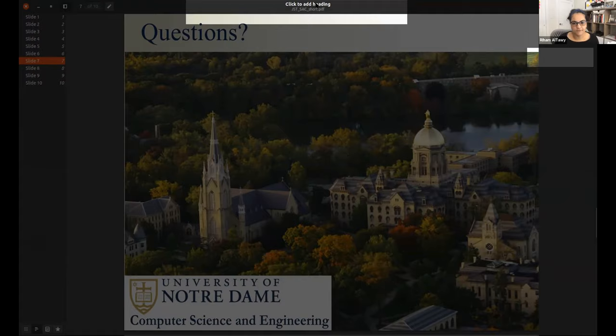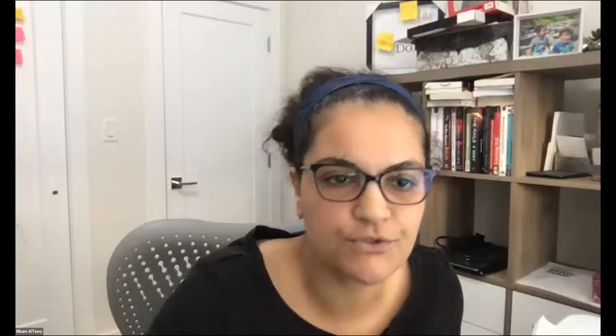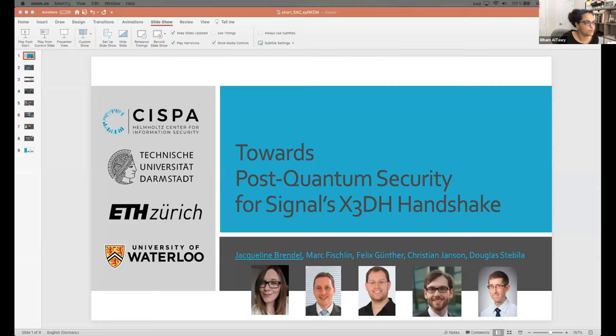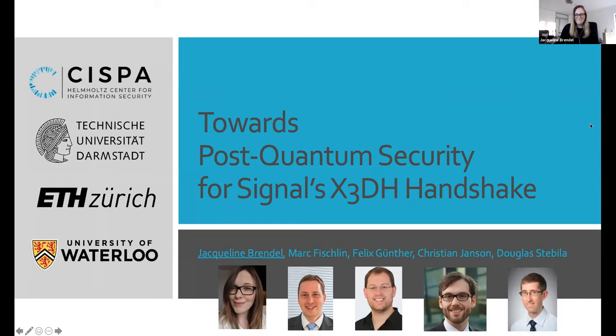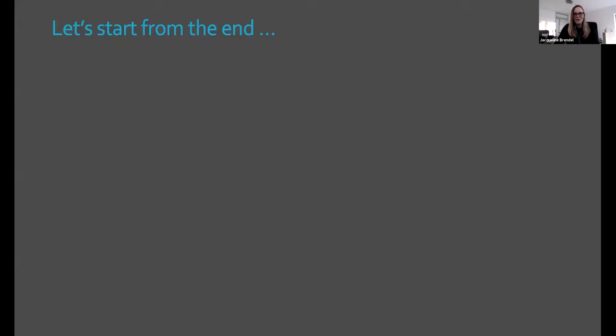Thank you, Jonathan. I think let's look at—we also don't have any questions still, and we're running somehow late, so thank you so much. Wait for the discussion in case any questions arise. We move to our last paper. The last presentation is titled Towards Post-Quantum Security for Signal's Extended Triple DH Handshake. The paper is authored by Jacqueline Brendel, Marc Fischlin, Felix Günther, Christian Janson, and Douglas Stebila. Jacqueline, go ahead.